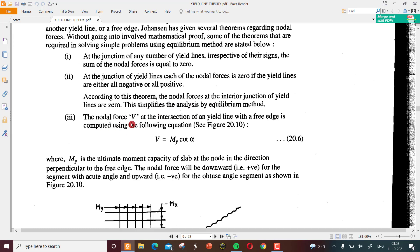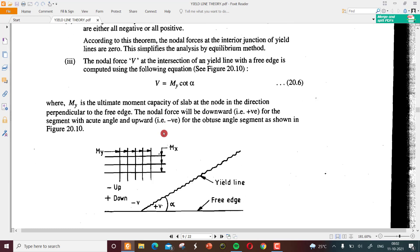The nodal force V at the intersection of a yield line with a free edge is computed using the following equation: V equals M_y times cot alpha. We have used this V in the case of equilibrium method solution of the slabs because this was giving a contribution to the shear force as well as the bending moment.